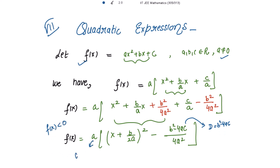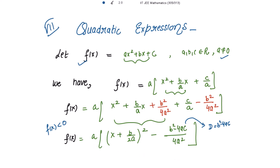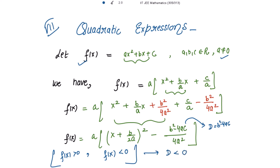For f(x) to be negative, a must be negative and the expression in the bracket must be positive — since the first term is positive and the denominator is positive, the bracket is positive when the discriminant is negative. So for f(x) < 0 for all x, we need a < 0 and D < 0. In both cases, the discriminant must be strictly negative, and the sign of a matches the sign of f(x).